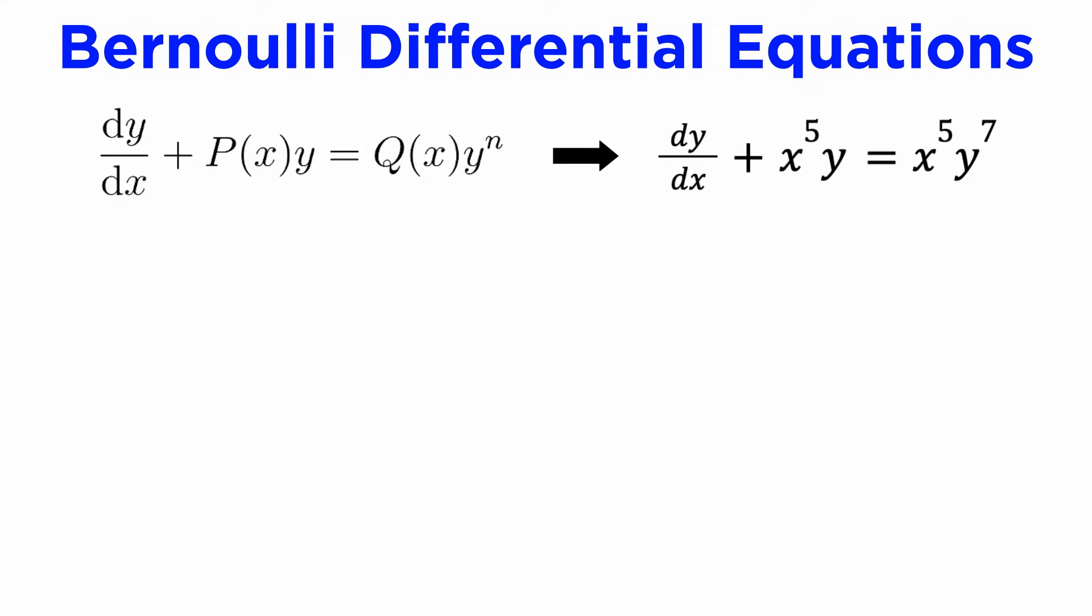Suppose we want to solve the DE dy/dx plus x to the fifth y equals x to the fifth y to the seventh. We can immediately see that this is a Bernoulli DE, with functions P and Q of x both being equal to x to the fifth, where the non-linear term has n equals 7. The correct substitution that we need to make will therefore be u equals y to the 1 minus n, which is y to the negative 6. We can rearrange this for y to get y equals u to the negative 1 over 6.